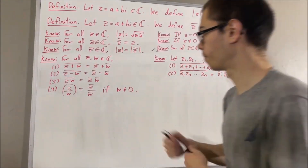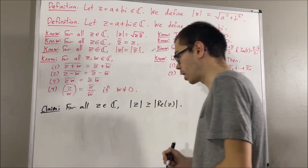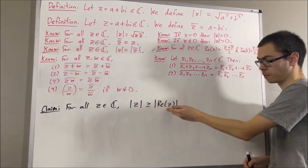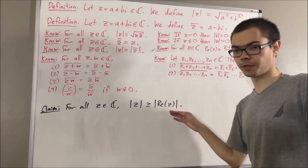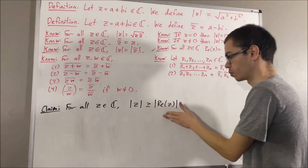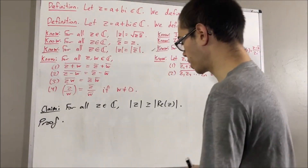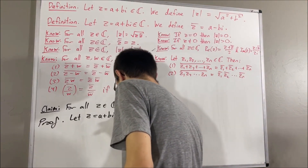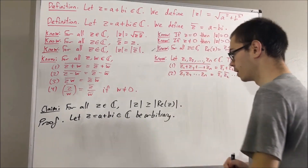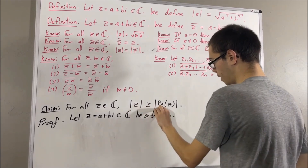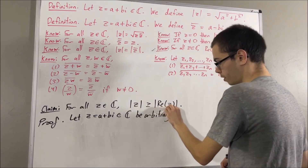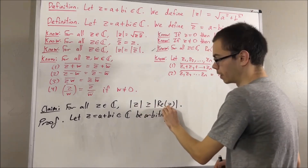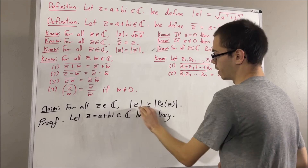Now let's prove another claim. For all complex numbers z, the absolute value of z is greater than or equal to the absolute value of the real part of z. The same will actually be true for the imaginary part, but we'll just prove this one. To start the proof, let's give ourselves an arbitrary complex number z equals a plus bi. We're going to show that the square of the absolute value of z is greater than or equal to the square of the absolute value of the real part, and it follows that the original inequality holds.